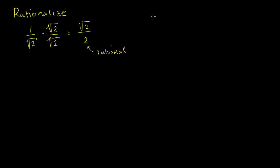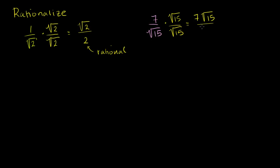Let's say I had 7 over the square root of 15. The first thing I'd want to do is just simplify this radical. The square root of 15 — 15 is 3 times 5, and neither of those are perfect squares. So this is about as simple as I'm going to get. So just like we did before, let's multiply this times the square root of 15 over the square root of 15. And so this is going to be equal to 7 times the square root of 15 — just multiply the numerators — over square root of 15 times the square root of 15, which is 15. So once again, we have rationalized the denominator. This is now a rational number. We essentially got the irrational number up in the numerator. We haven't changed the number, we just changed how we are representing it.